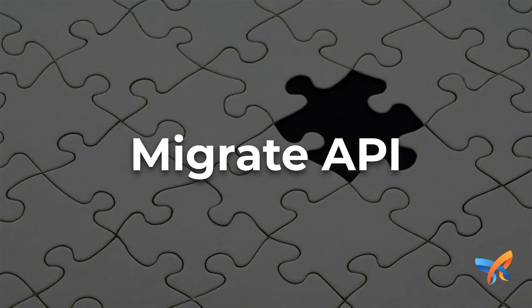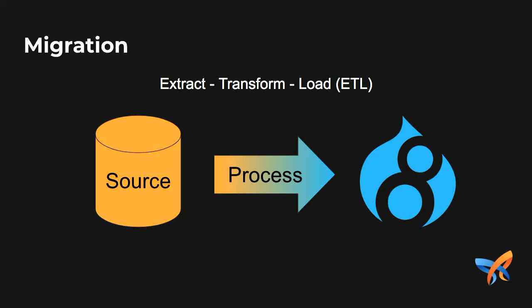The migrate API in Drupal is a three-step process: extract, transform, and load. Extract is where you get the data from your source, but the raw data you're getting may not be in the right format that will work in Drupal. That's where the process plugins are used to transform the data into something useful in Drupal.